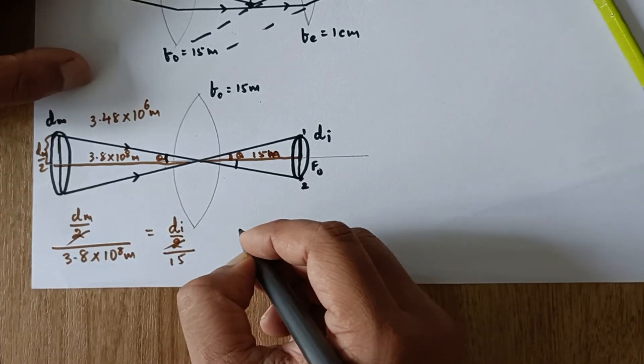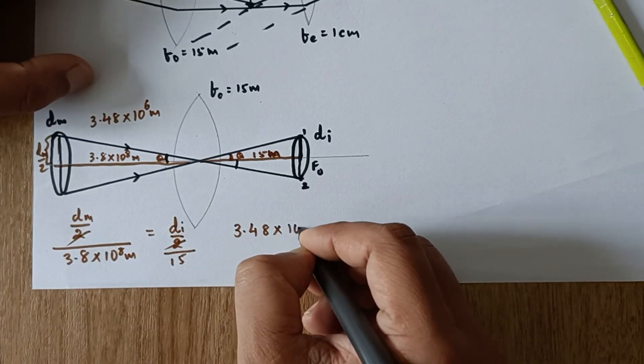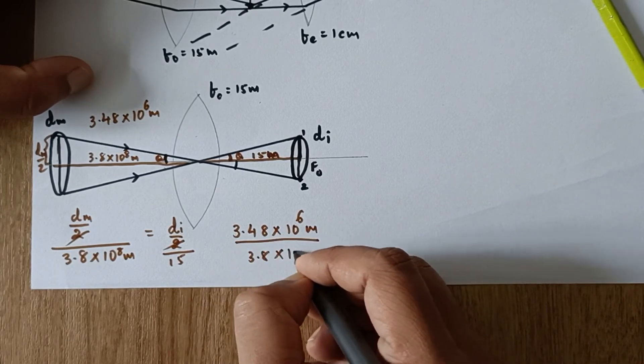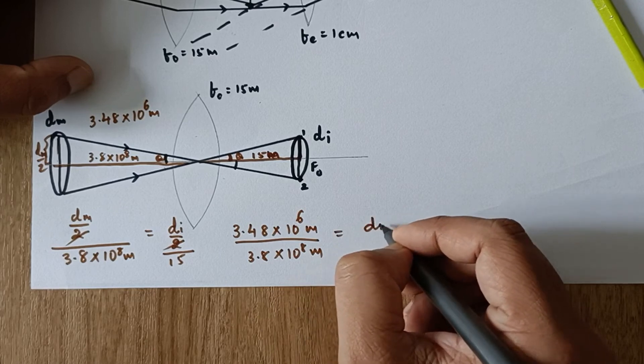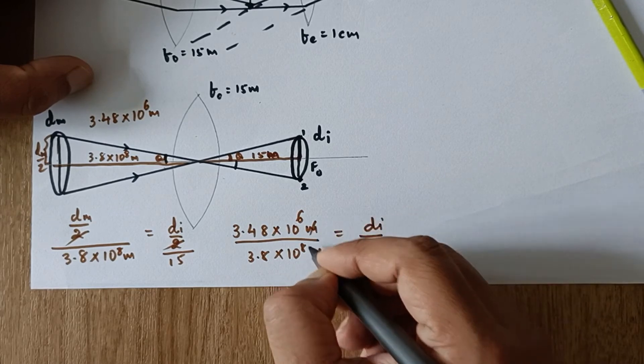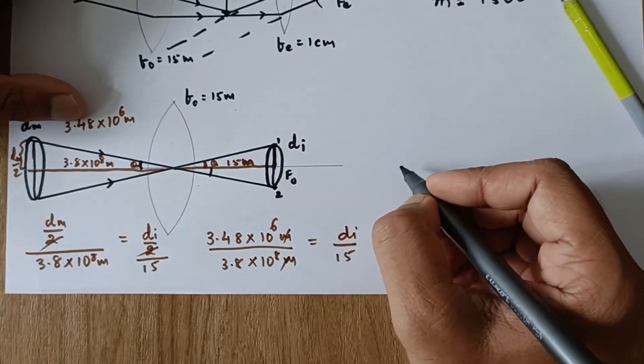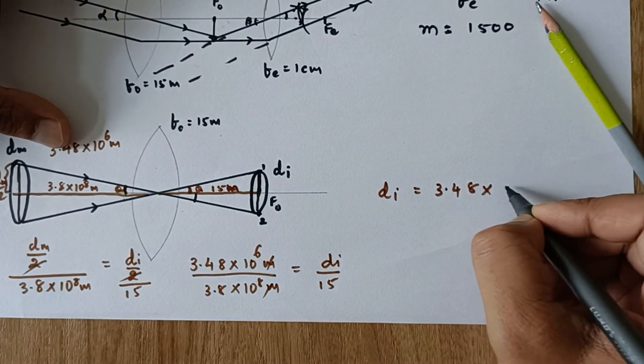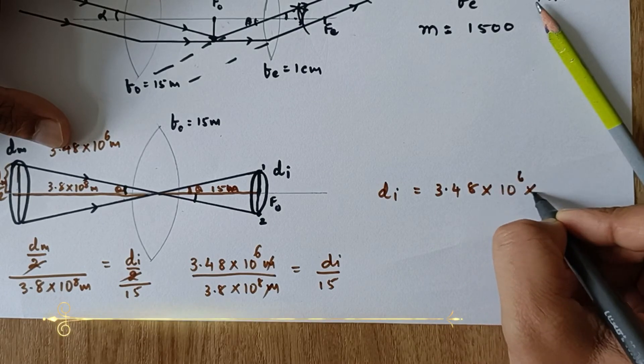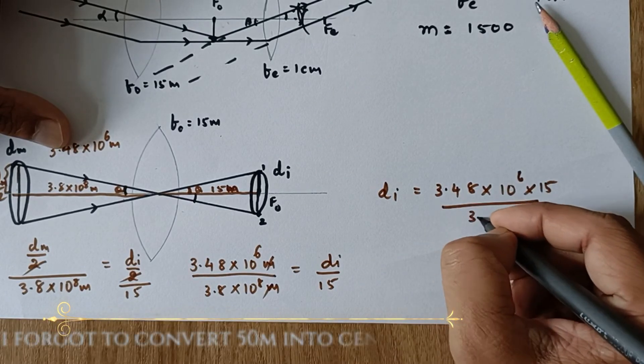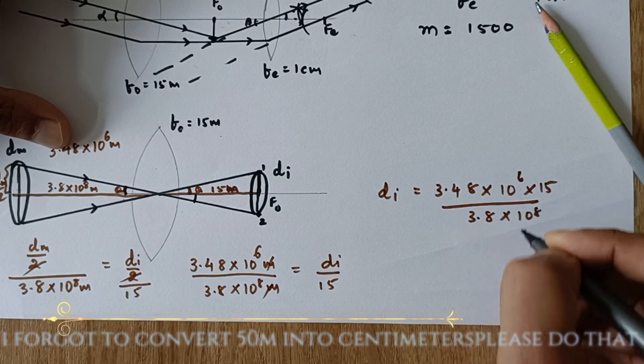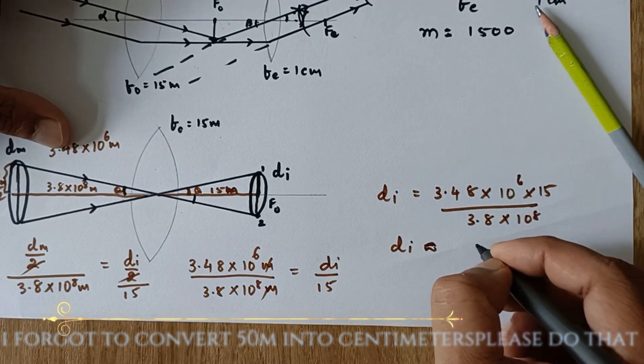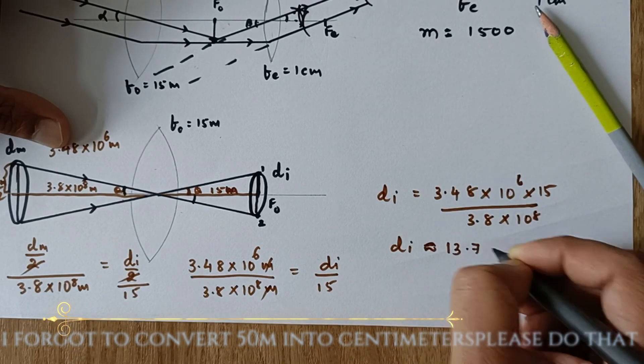And the diameter of the moon, I am going to substitute the value 3.48 into 10 raised to 6 meters divided by 3.8 into 10 raised to 8 meters. So dI would be equal to 3.48 into 10 raised to 6 into 15 divided by 3.8 into 10 raised to 8. Now if you solve this, you will get your answer approximately this to be 13.7 centimeters.